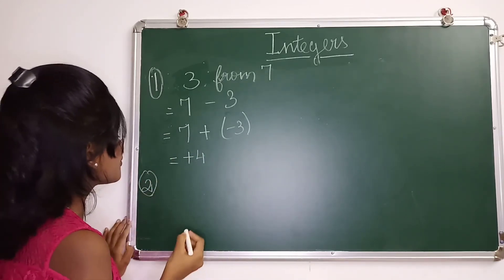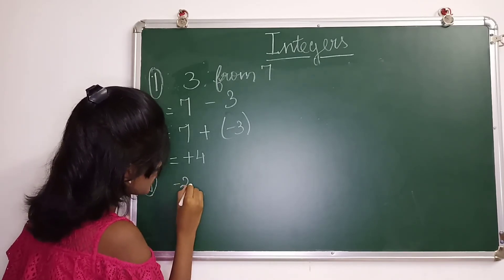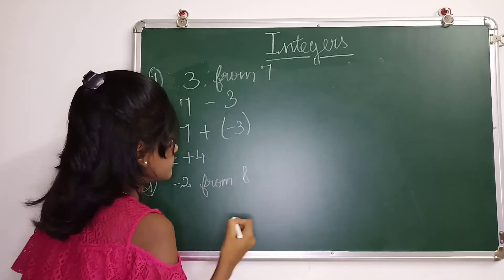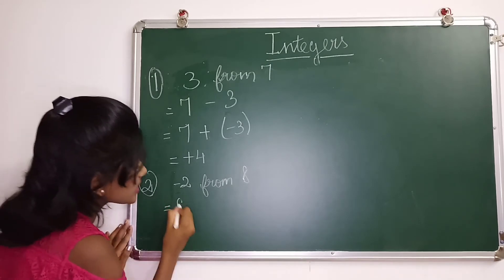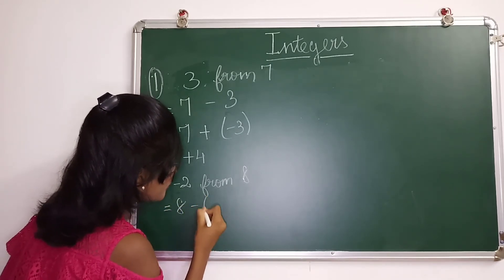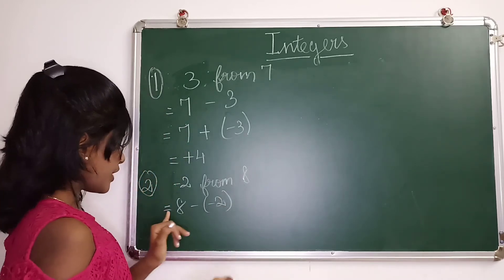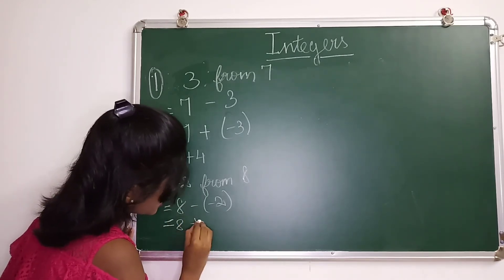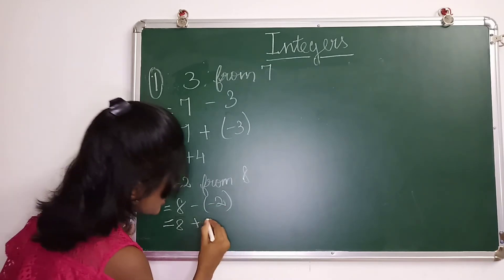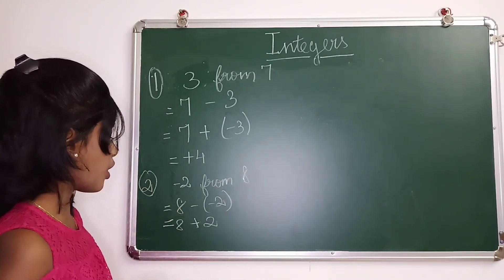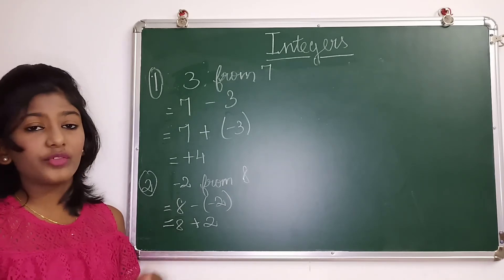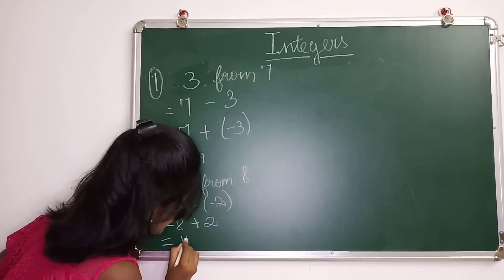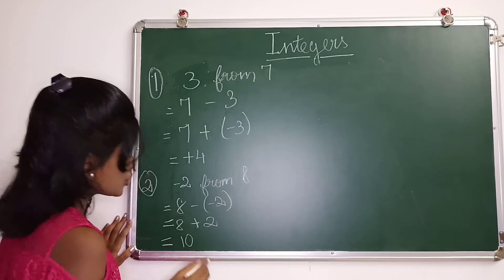The next example is: subtract minus 2 from 8, that is 8 minus minus 2. We leave 8 as such, convert the subtraction into addition, and take the additive inverse of minus 2, which is 2. Since the signs are now the same, we add them: 8 plus 2 is 10, and it's positive, so the answer is 10.